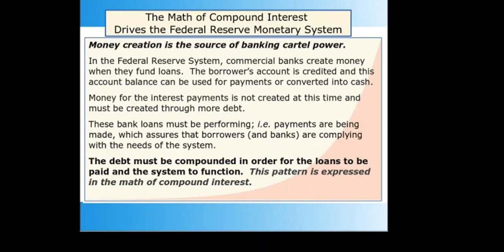The political element of debt bondage is essential for the Fed system. This is enforced by the requirement for performing loans, meaning the borrower must be making payments for the loan to be performing. Without this requirement, control through debt bondage could not be maintained. The system creates a chronic shortage of money — not enough available money to make the payments. This creates circumstances where people can be coerced or enticed into behavior that favors the banking cartel. There is always a need for more money, which can only be obtained through new debt.